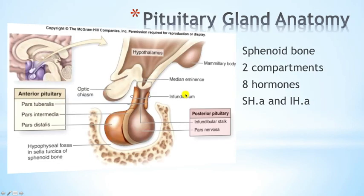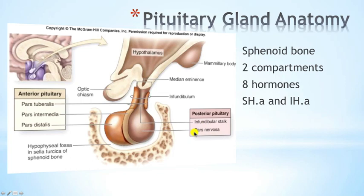The pituitary gland is located in the sphenoid bone in a hypophysial fossa — the sella turcica — and is covered by the sellar diaphragm. It consists of two compartments: one posterior and one anterior. The posterior compartment consists of a pars nervosa — pars meaning part, nervosa meaning neuronal — so this is a collection of neuronal endings, and it also consists of an infundibulum or infundibular stalk.